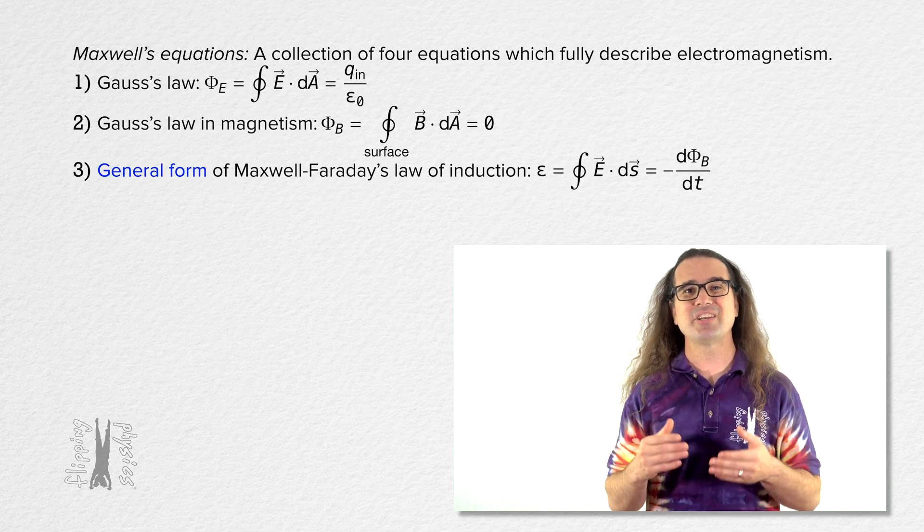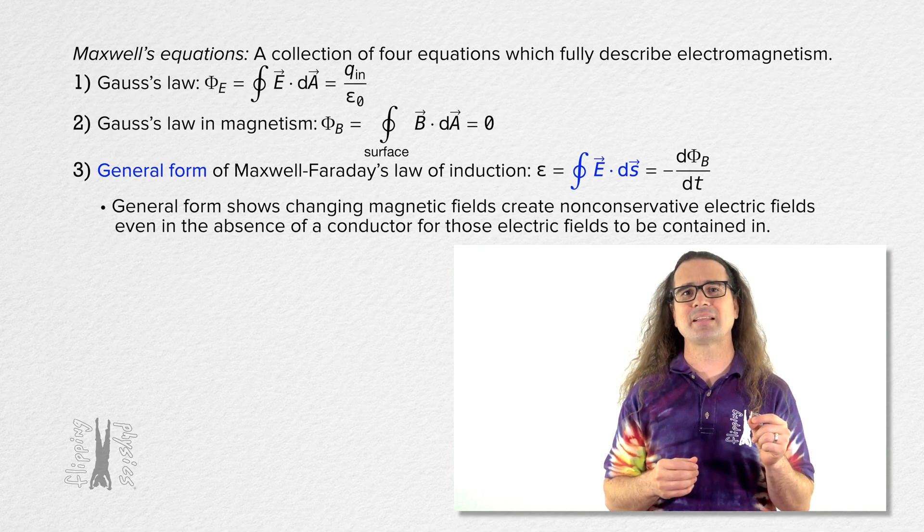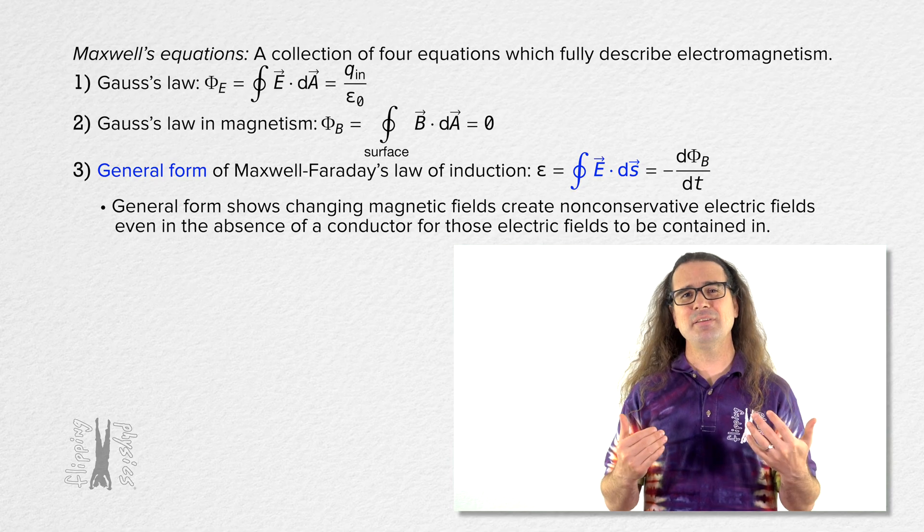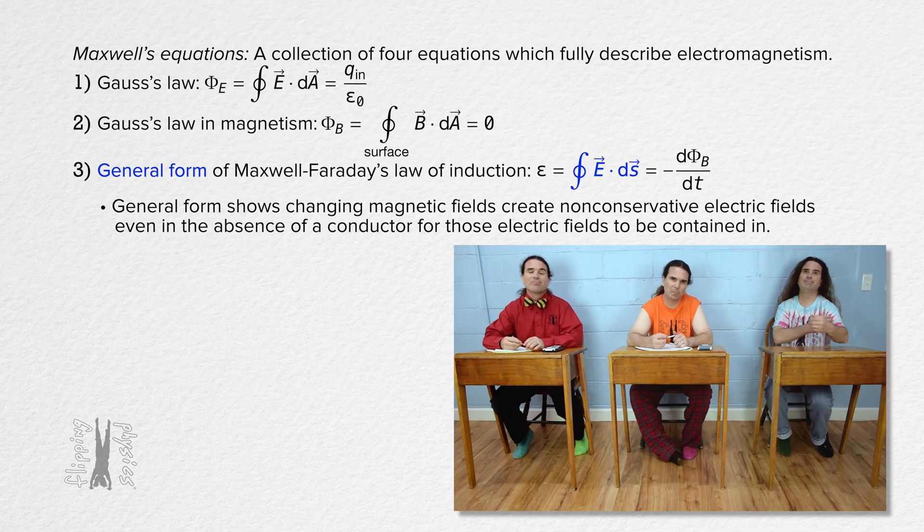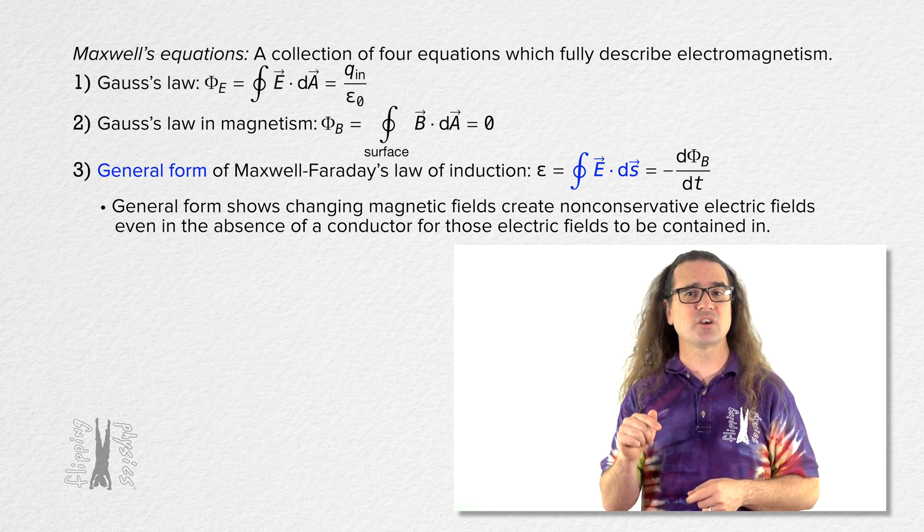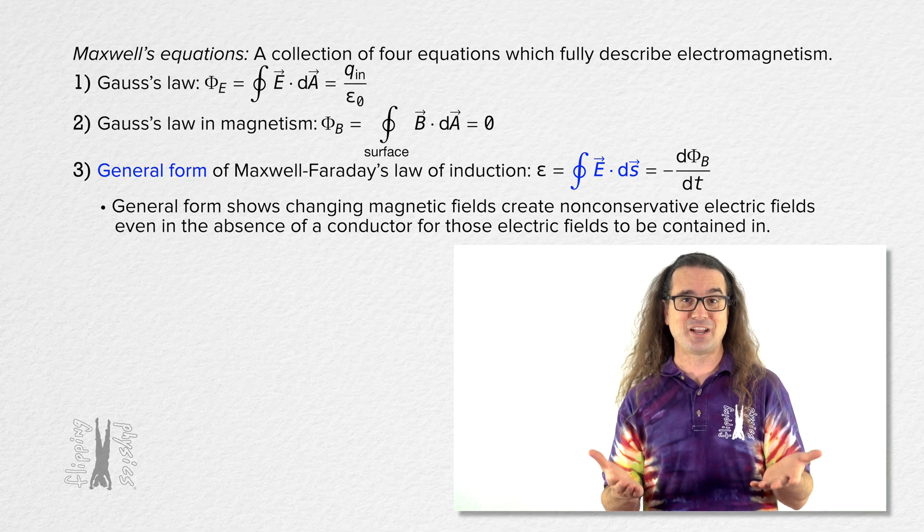The more general equation adds the middle part of the equation which shows that the changing magnetic fields create non-conservative electric fields even in the absence of a conductor for those electric fields to be contained in. That's right, a changing magnetic flux creates non-conservative electric fields in free space. No electrical conductor needed.